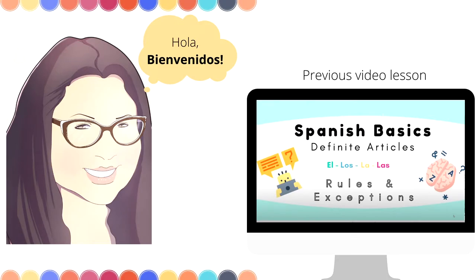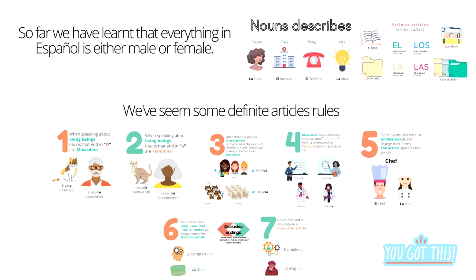In our previous lessons, which I leave the link below, we went over definite articles, rules, and exceptions. And we learned that everything in Spanish is either male or female. We went over some definite article rules, exceptions, and a little bit of everything.